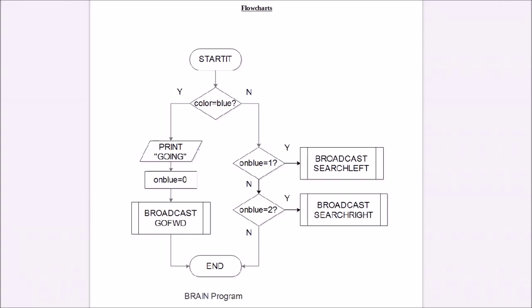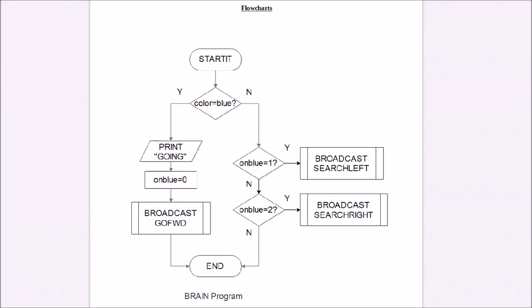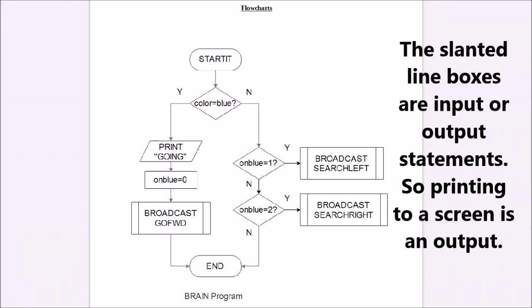The first question that's asked is, is the color blue? This says, is the color sensor detecting blue line or blue tape? If yes, then it'll print going to the screen of the robot. It'll set something called on blue equals zero, and it will broadcast go forward.